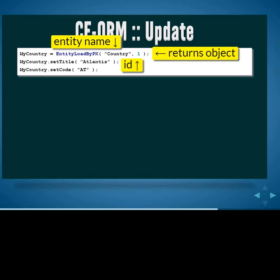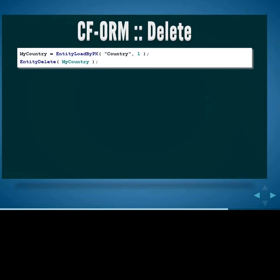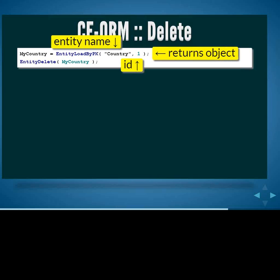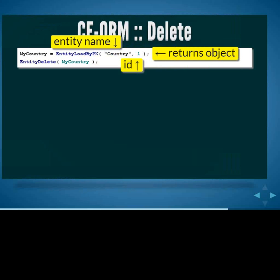For deleting objects, this is different from straight SQL — you need to load the object first before you can delete it. You can't just tell it to delete an object by its ID; you have to go off and load it. So I load the entity first, and then once I've loaded it, I call the delete method, and that gets the record removed from the database.